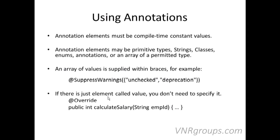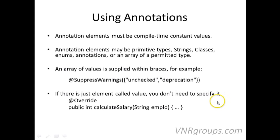Generally, you can supply an array of values to an annotation. For @SuppressWarnings, for example, you can pass values for unchecked exceptions or deprecated fields or methods using an array in curly braces. If there is just one element called "value", you do not need to specify it at all — for example, @Override does not need anything passed to it.